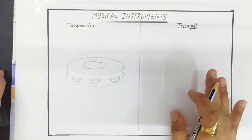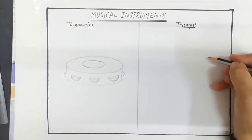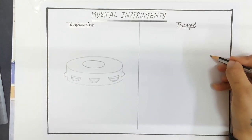Then the second instrument is trumpet. For trumpet, draw one vertical oval shape like this.